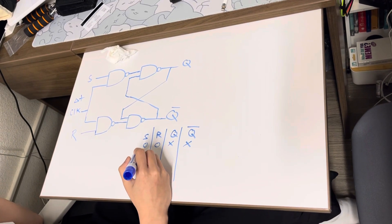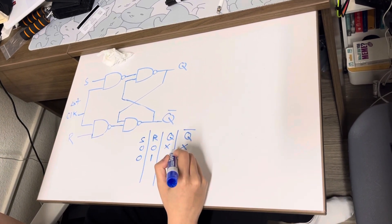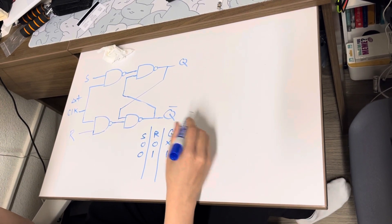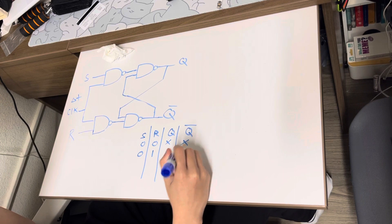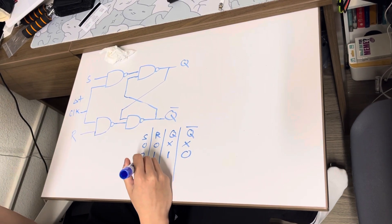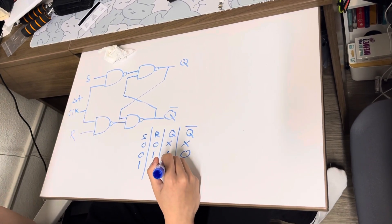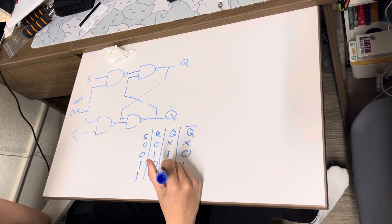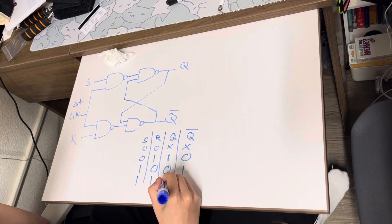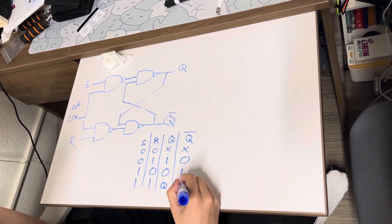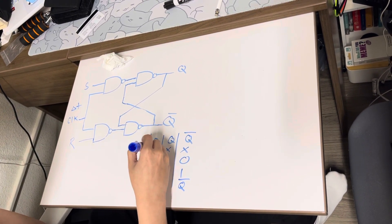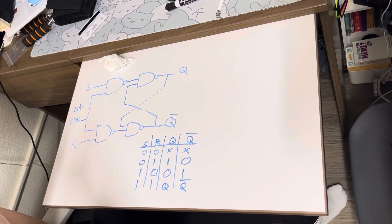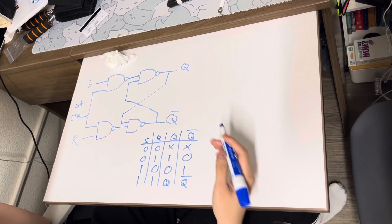When you have S=0, R=1, the output is going to be 1 for Q, and the complement of that is 0. For S=1, R=0, Q is going to be 0 and the complement will be 1. For S=1, R=1, the function doesn't change — Q and Q-not remain the same. That is the truth table for the SR latch using NAND gates.